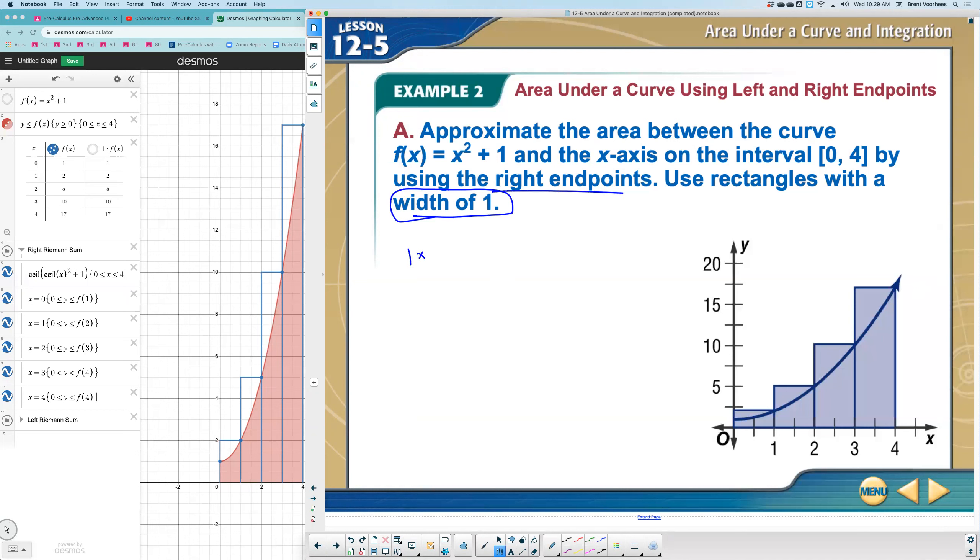So basically what I'm doing is taking the width of one or the base, and I'm going to multiply it times the height. And the height is determined by taking the f. If I want the right endpoint for this block, my right endpoints are going to be one, two, three, and four. So one times f of one. And then again, a base width of one times the height of f of two, one times f of three, and one times f of four.